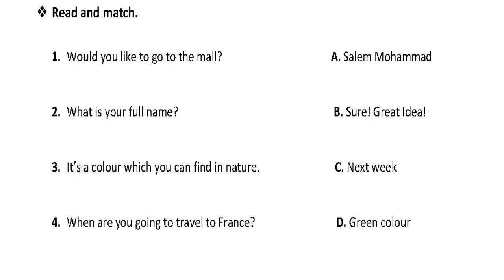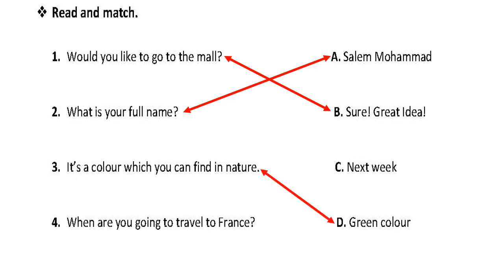Number one, 'Would you like to go to the mall?' — the suitable choice is B: Sure, great idea. Number two, 'What is your full name?' — the answer is A: Salim Muhammad. Number three, 'It's a color which you can find in nature' — yes, D: green color. Number four, 'When are you going to travel to France?' — C: next week.